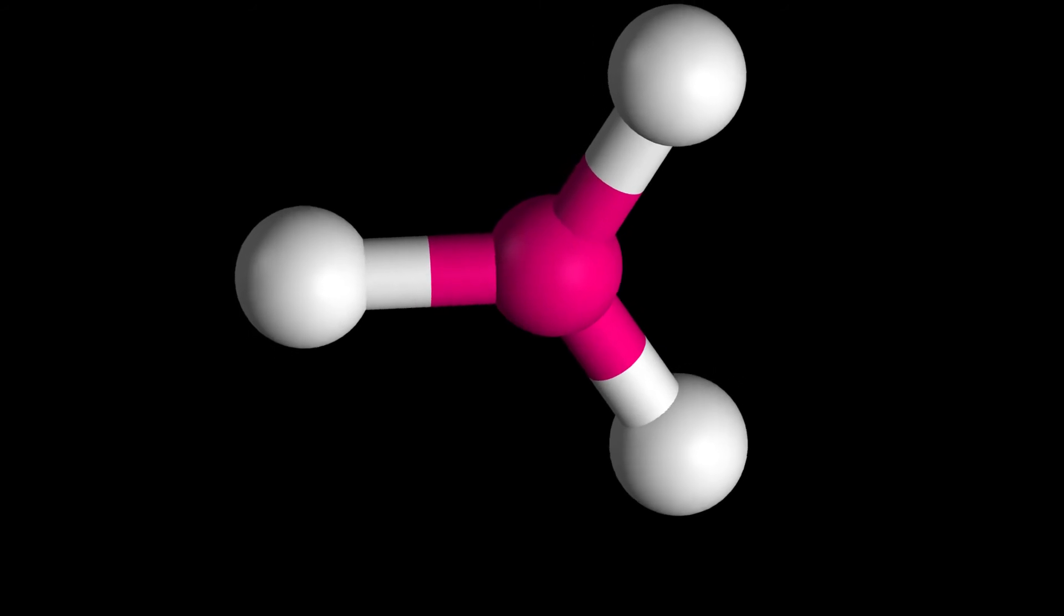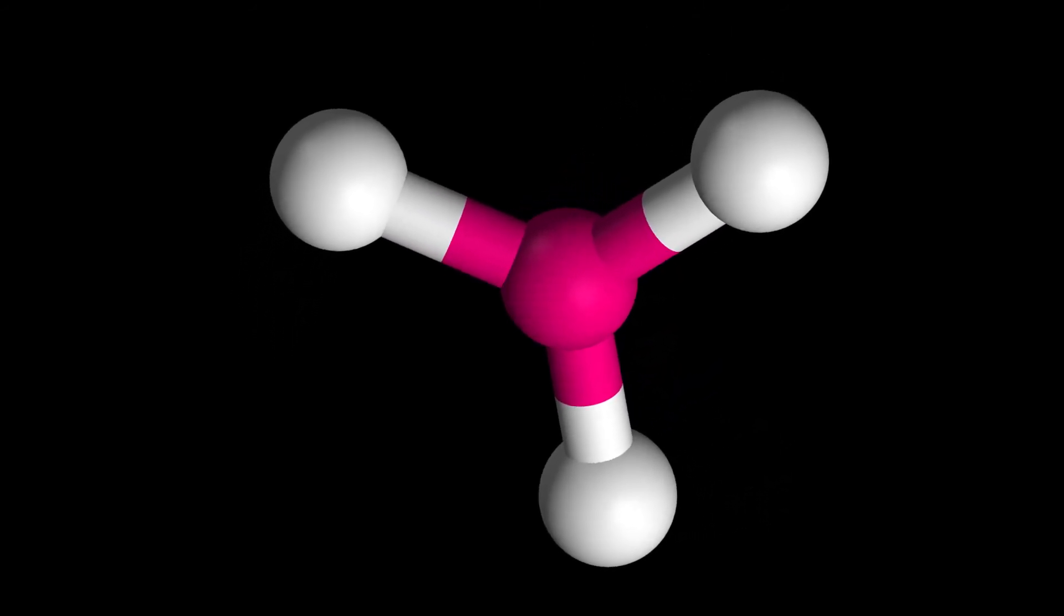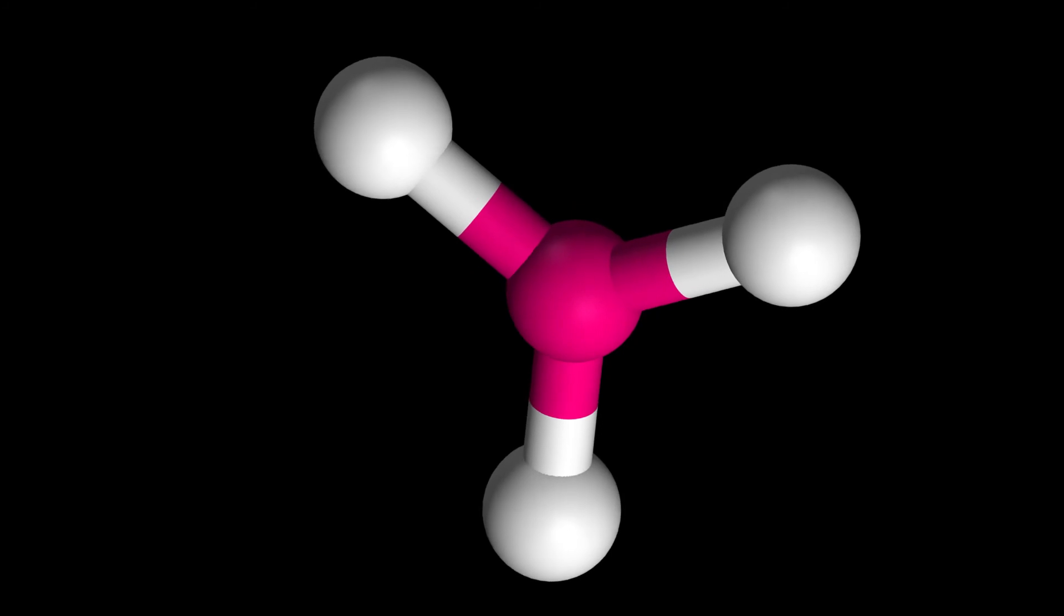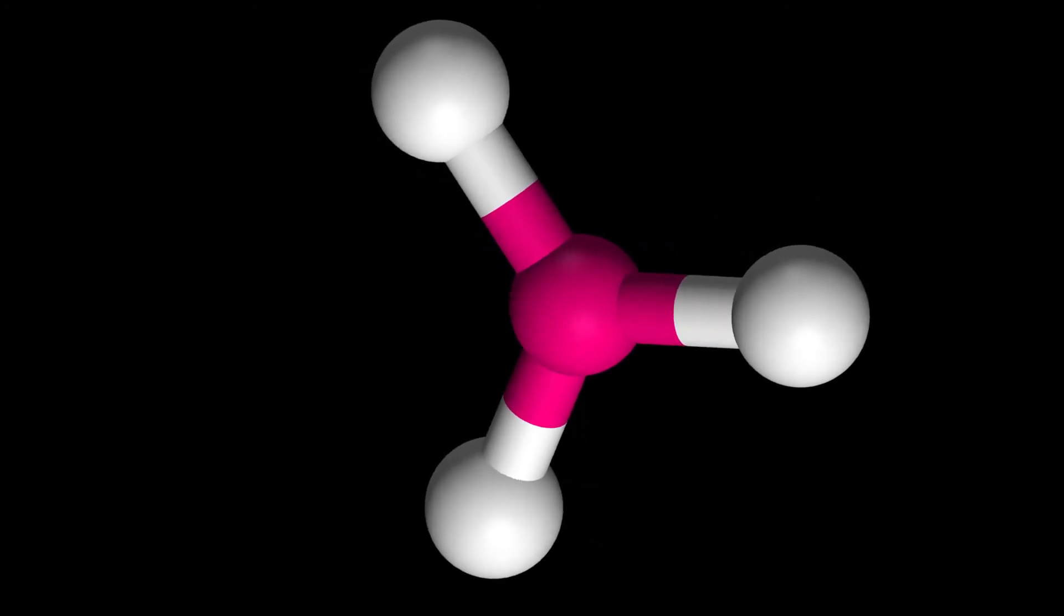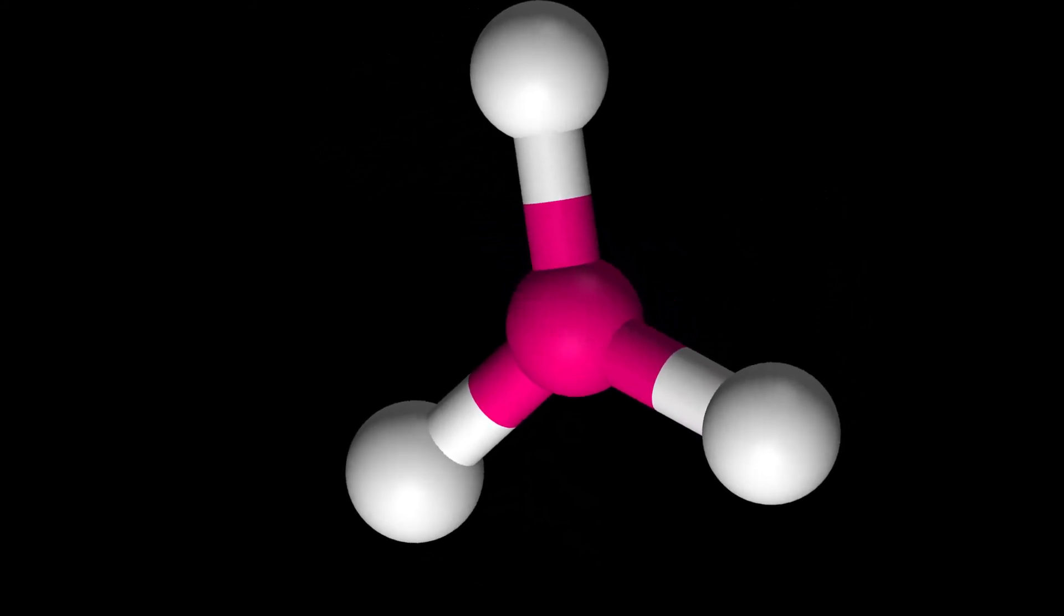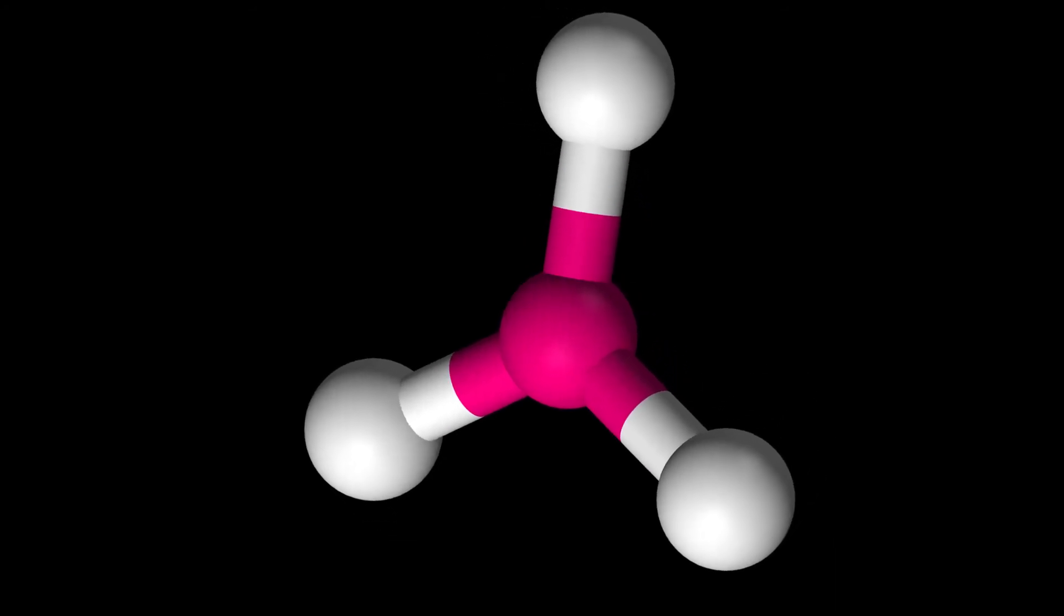In the periodic table, Tennessine is expected to be a member of Group 17, all other members of which are halogens. Some of its properties may significantly differ from those of the halogens due to relativistic effects.